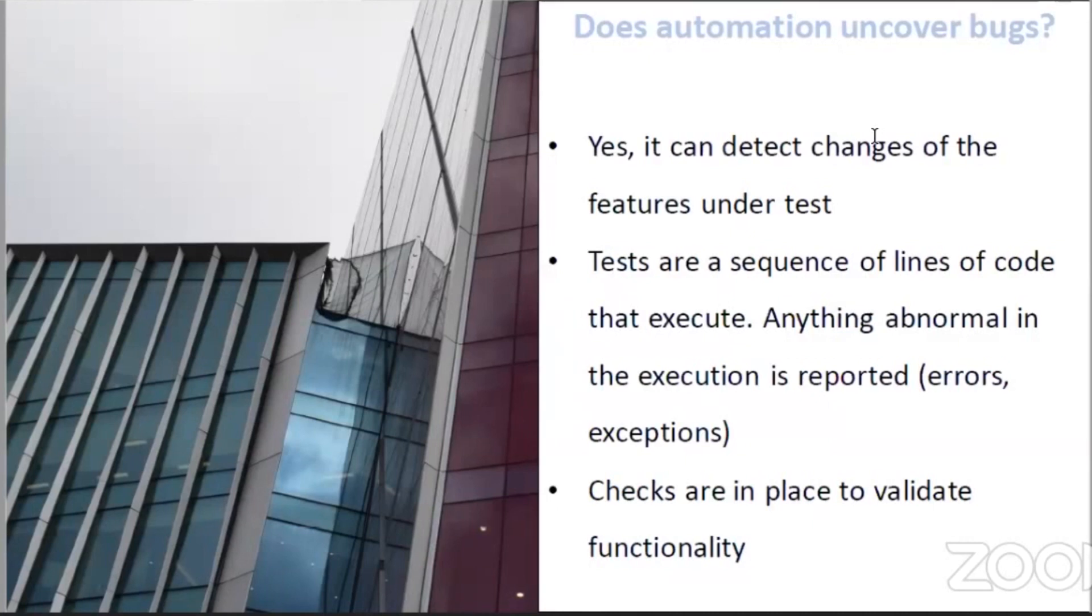You are doing something, you're clicking on a button, you're checking for some response, you're doing your stuff. You can uncover bugs in the code that you wrote. So if the sequence of your steps that was previously working is not working anymore, because maybe, let's say, if it's the UI, a new popup appeared and you wanted to click on something and the popup is in the way...